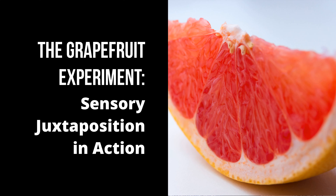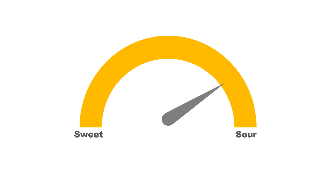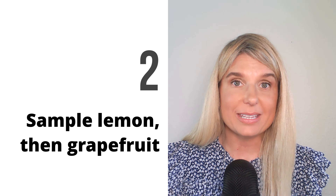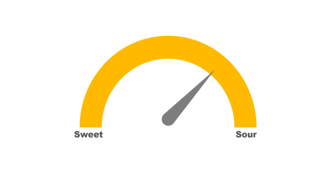Let's try a simple experiment to test sensory juxtaposition in action. Grab three pieces of grapefruit, one piece of lemon, and something extra sweet like brown sugar or candy corn. First, sample the grapefruit — my grapefruit tastes sour. Next, sample your lemon and then the grapefruit again. Now my grapefruit tastes sweet.